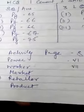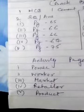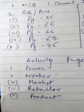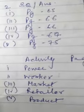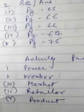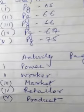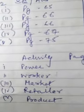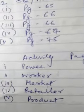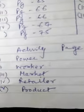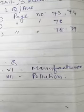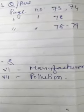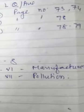Activity page 8: first one is power, second one is worker, third one is market, fourth one is retailer, fifth one is product, sixth one is manufacturer, seventh one is pollution.